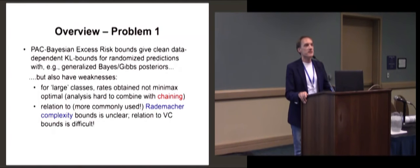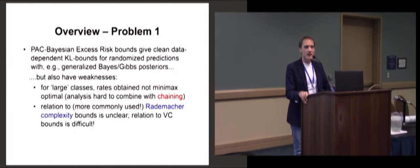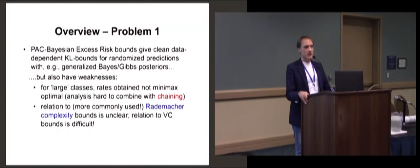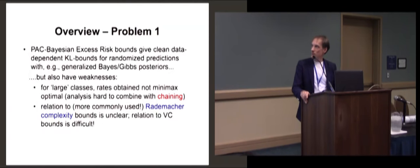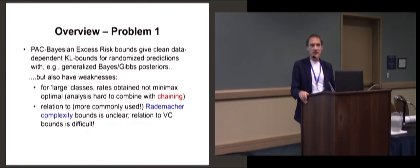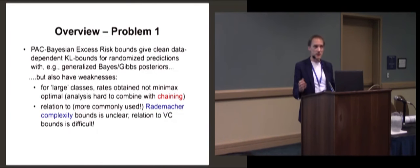This is about excess risk bounds — an alternative to the generalization bounds seen in the previous talk. These are oracle bounds that tell you how fast you learn, in the sense that you have a set of predictors and you want to learn a good predictor from the data — how fast you converge to the best predictor in your class. The bounds are very similar to PAC-Bayesian bounds, with similar mathematics, and are often studied by PAC-Bayes people. They also have the familiar KL complexity term.